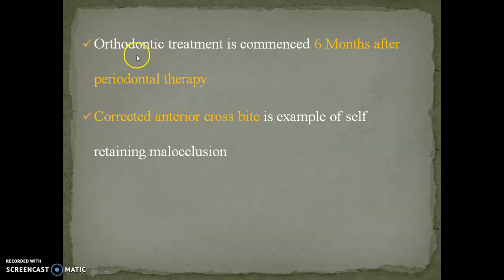Orthodontic treatment should be commenced 6 months after periodontal therapy. Corrected anterior tooth crossbite is an example of self-retaining malocclusion. Those were a few high-yield facts from Profit and Graeber regarding orthodontics. You can do a quick revision within 5 minutes and prepare better for your exam. Thank you all and take care.